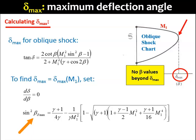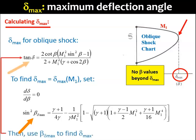By doing this, you can find the value of beta associated with the maximum value of delta. Once you have found that value of beta, which is labeled here as beta delta max, you can plug it back into the tangent delta equation up here, and this will get you the value of delta max.